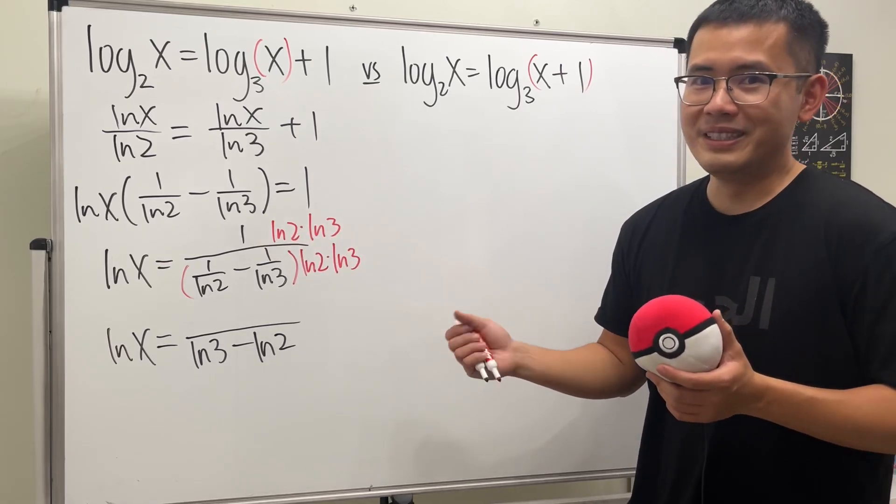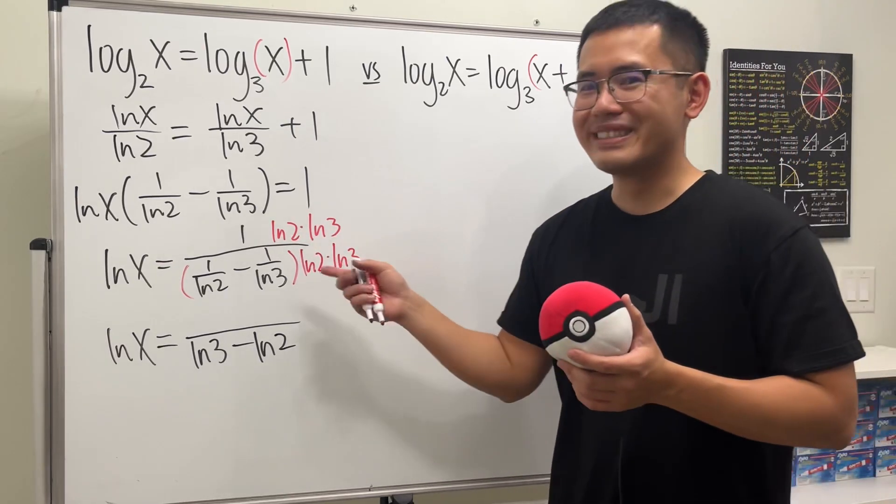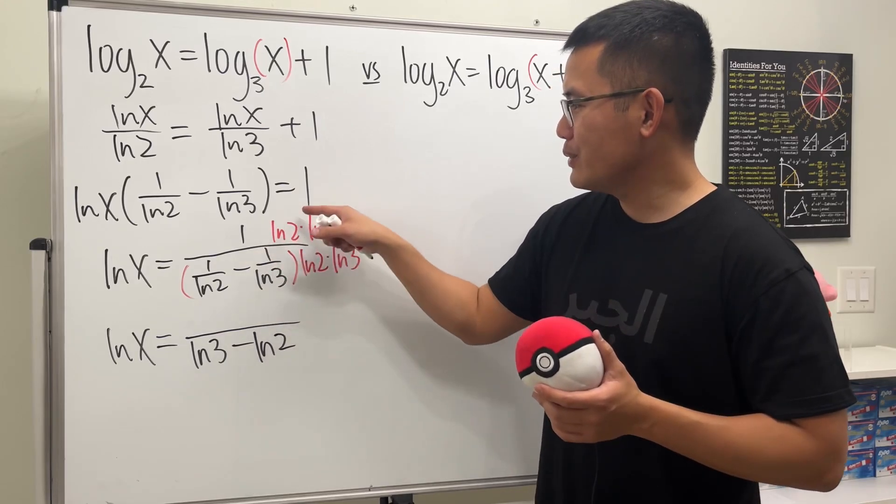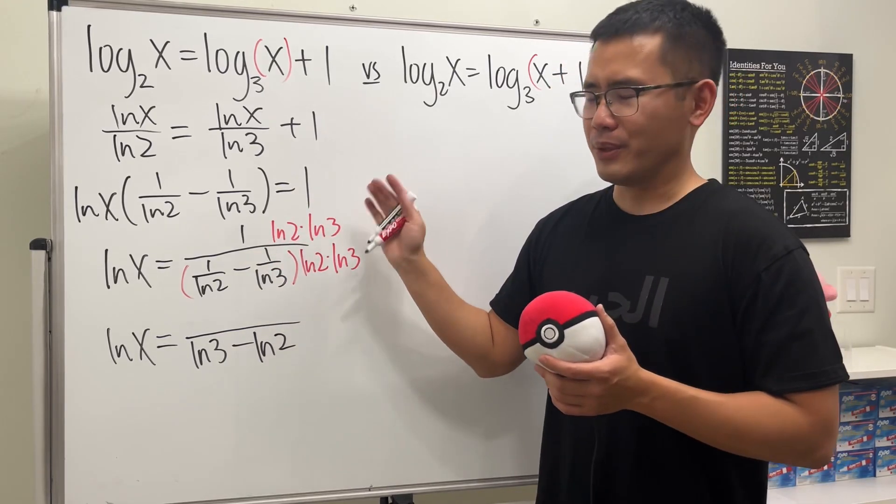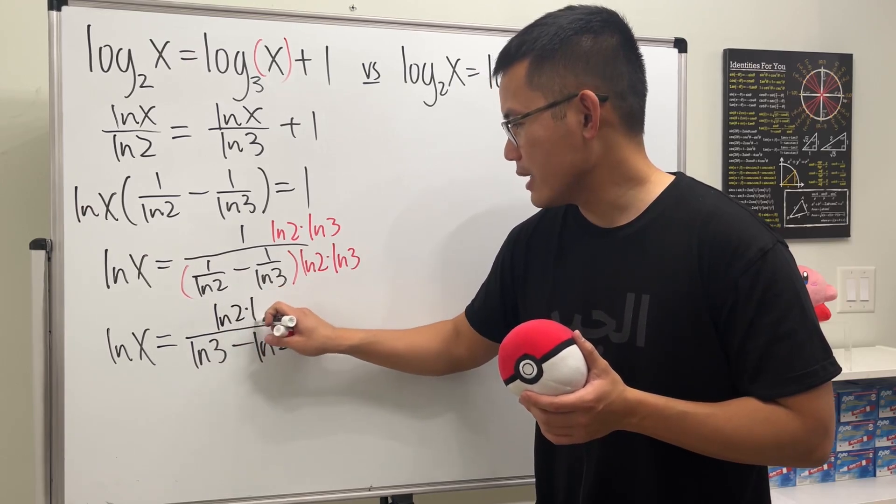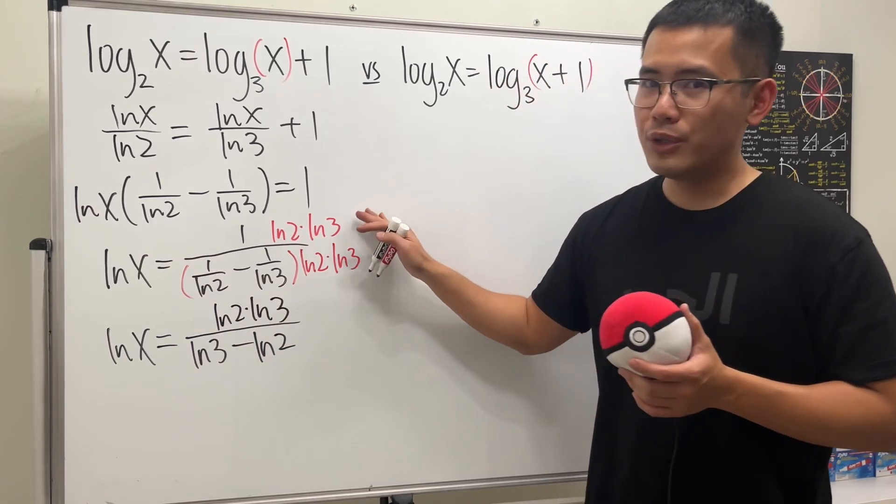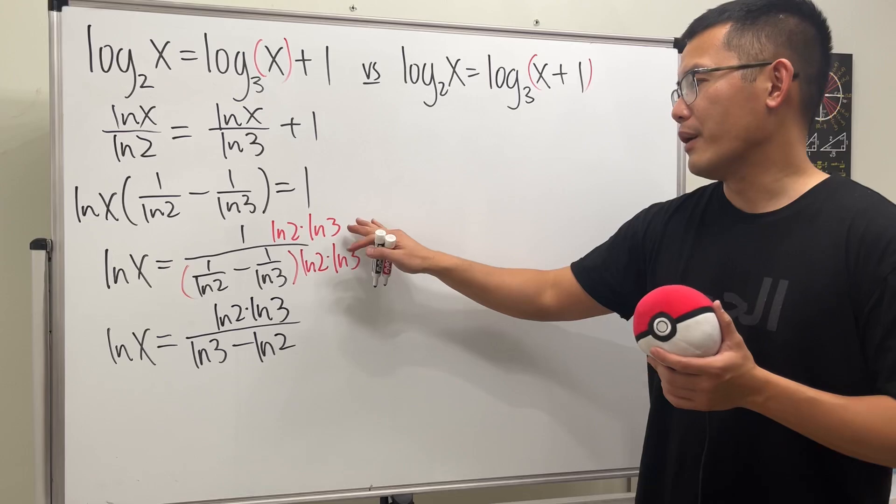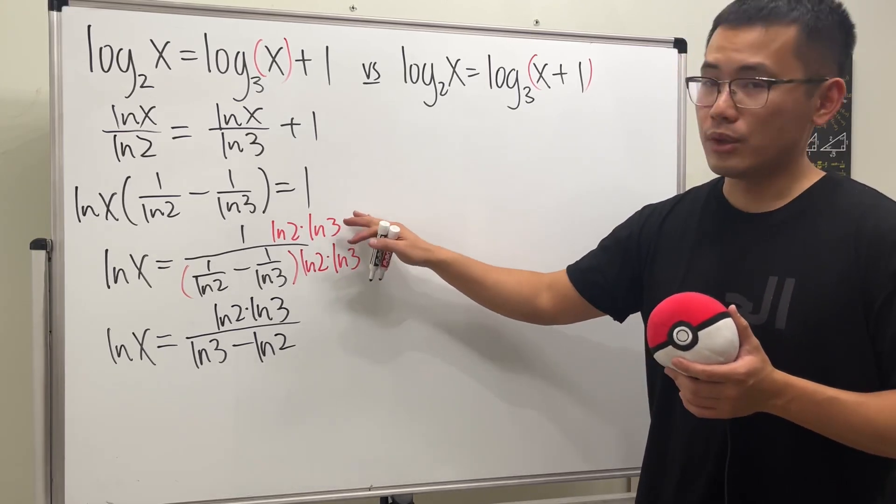And for the top, though, do not do anything, because we cannot do anything with this. Even though you can put the ln 2 to the power here, but don't do that. Just leave it like this. ln 2 times ln 3. And make sure you don't say that's ln 6, or ln 9, or ln of 17. Don't do any of that.